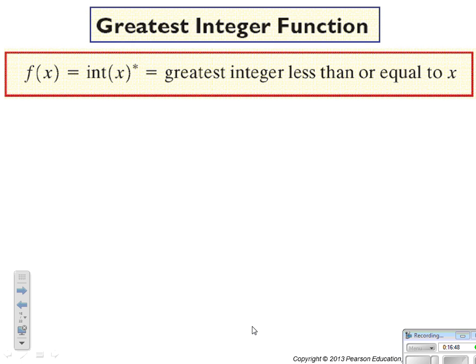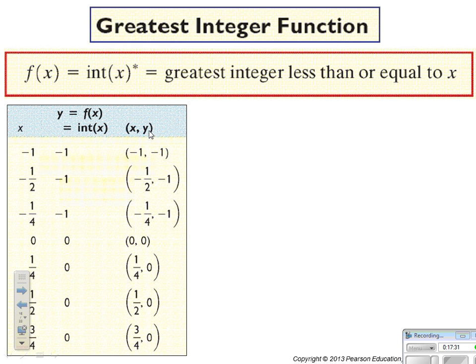The greatest integer function is written as f of x equals int(x), and it means the greatest integer less than or equal to x. Making a table and drawing a graph is the best way to understand greatest integer. If you plug in any integer, you will get that same integer as output — plug in negative 1, you get negative 1.